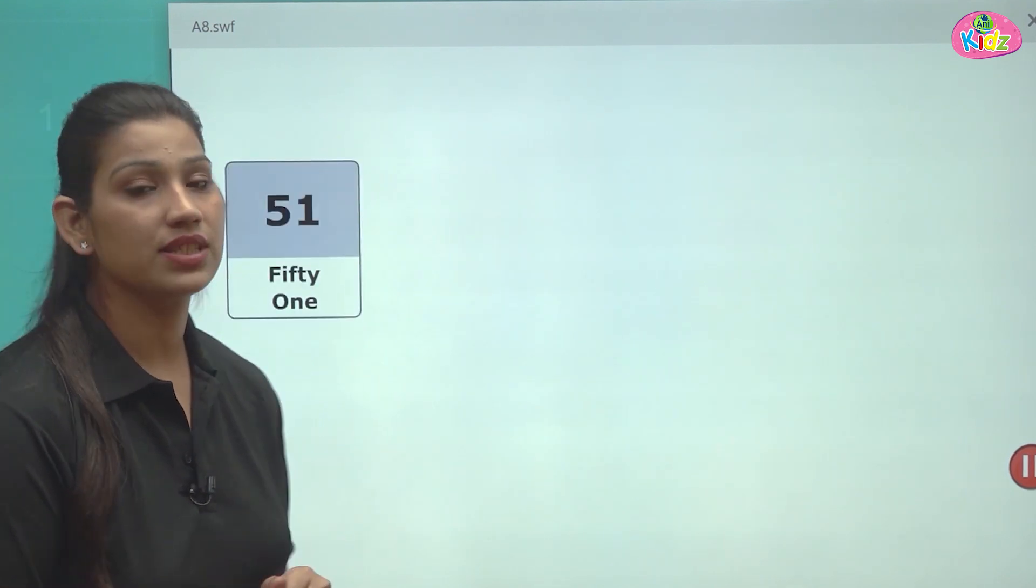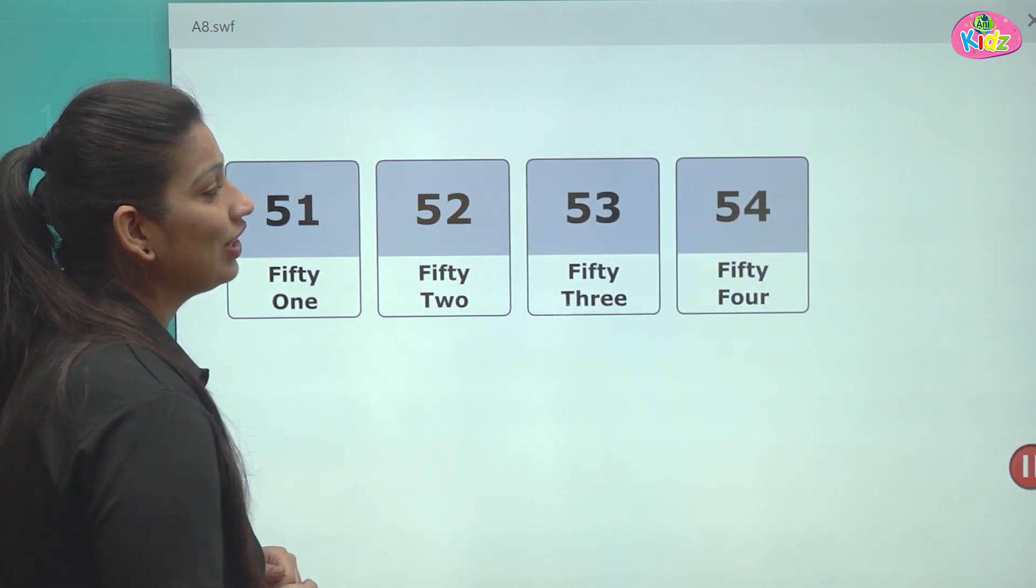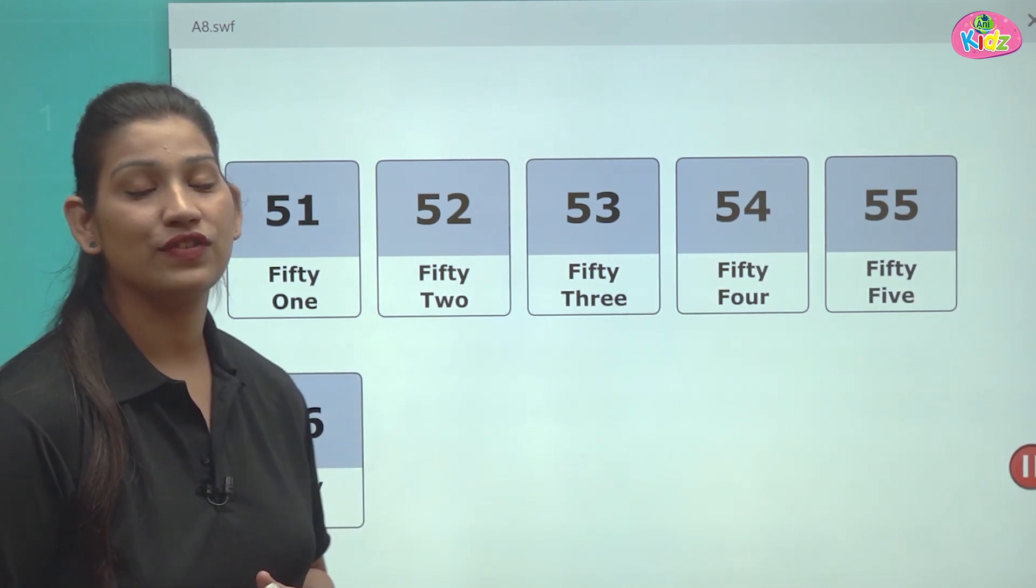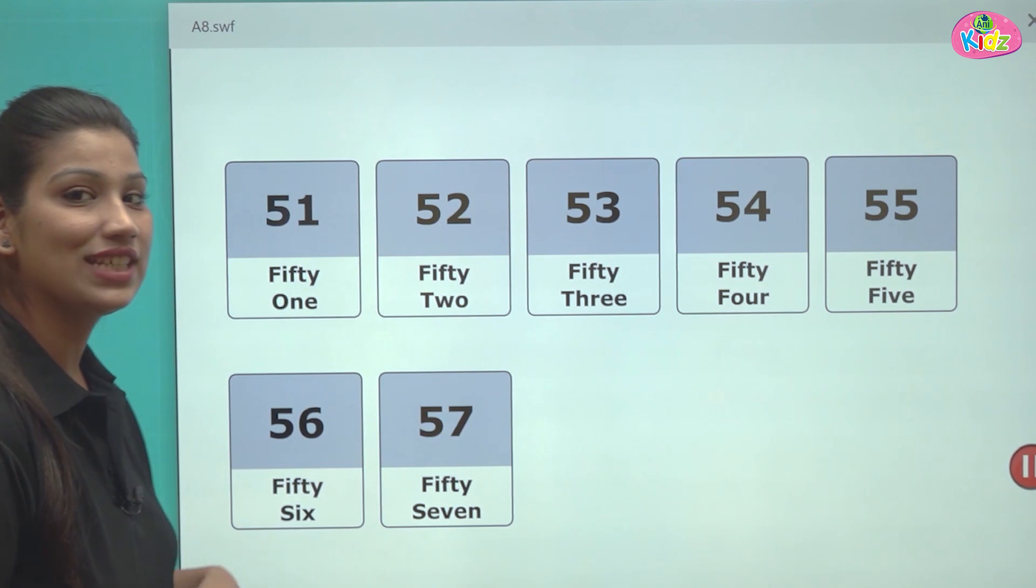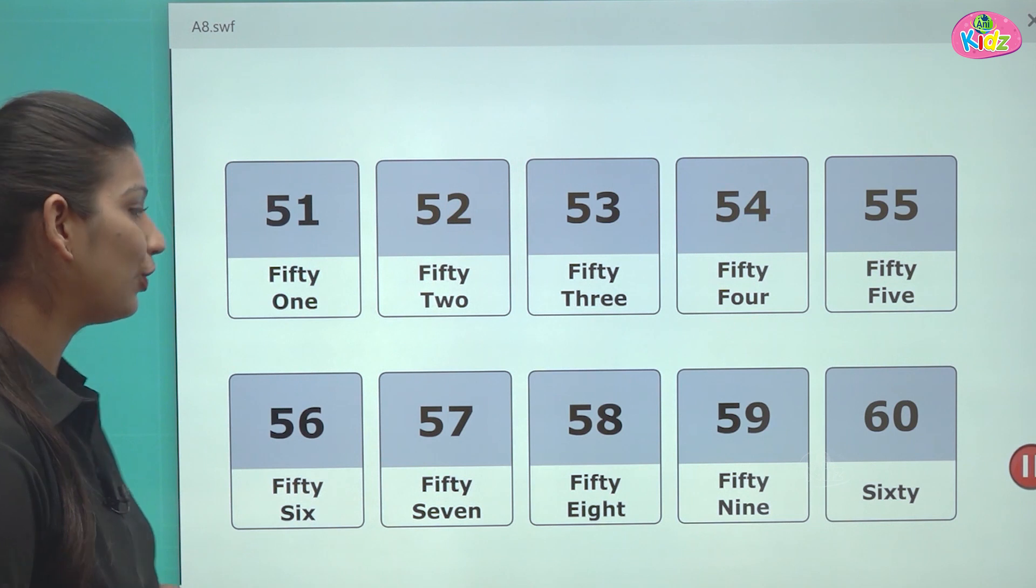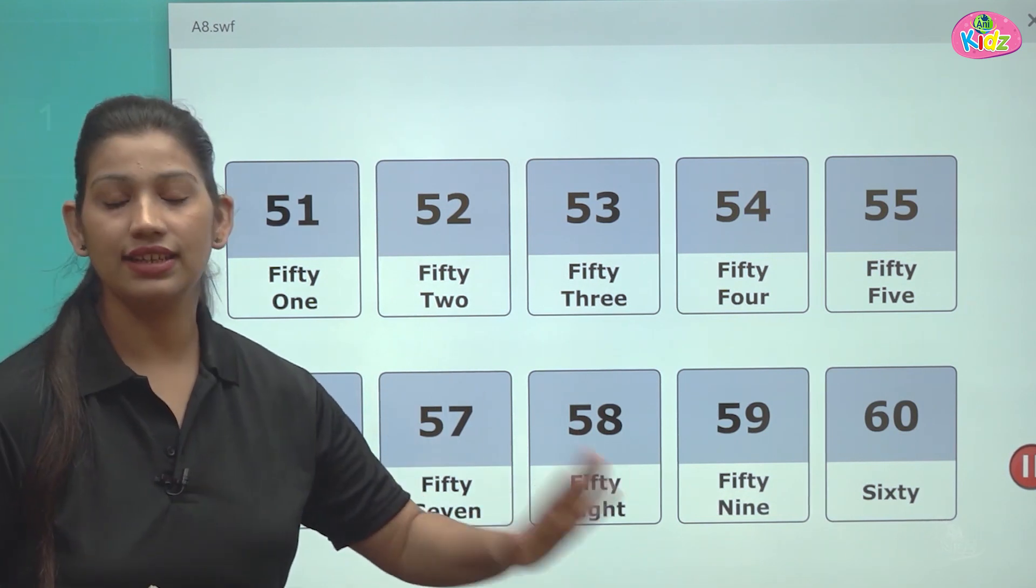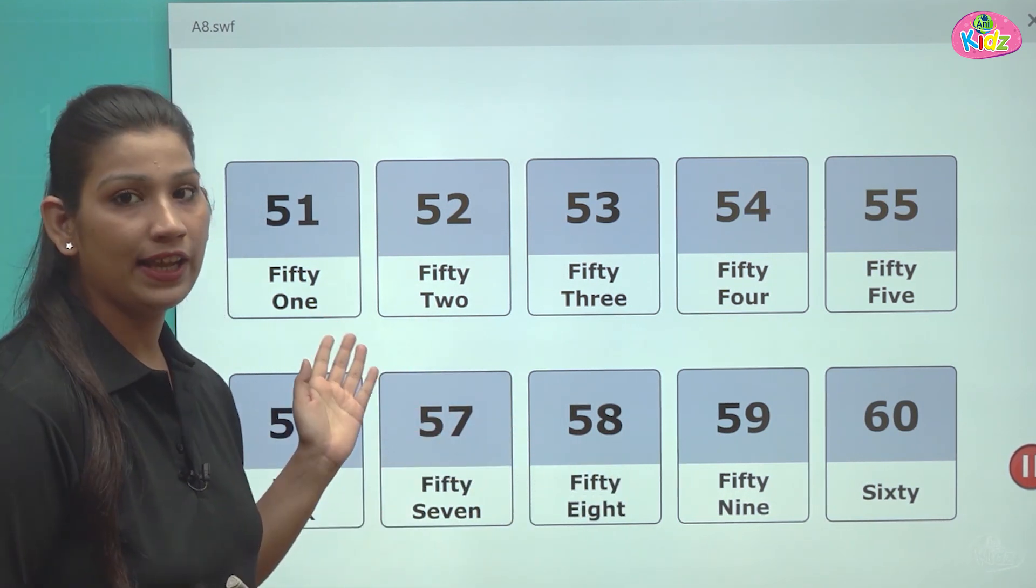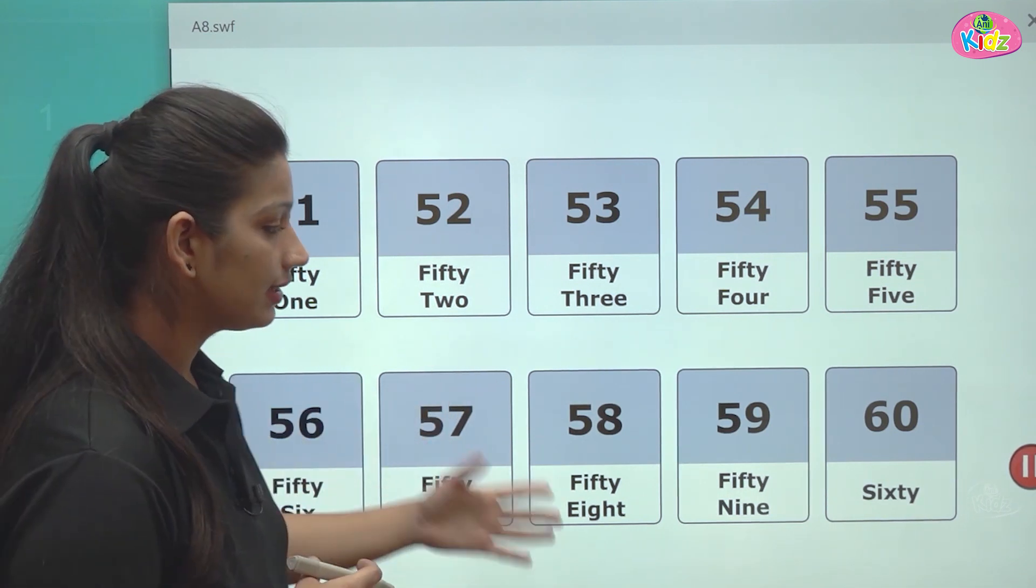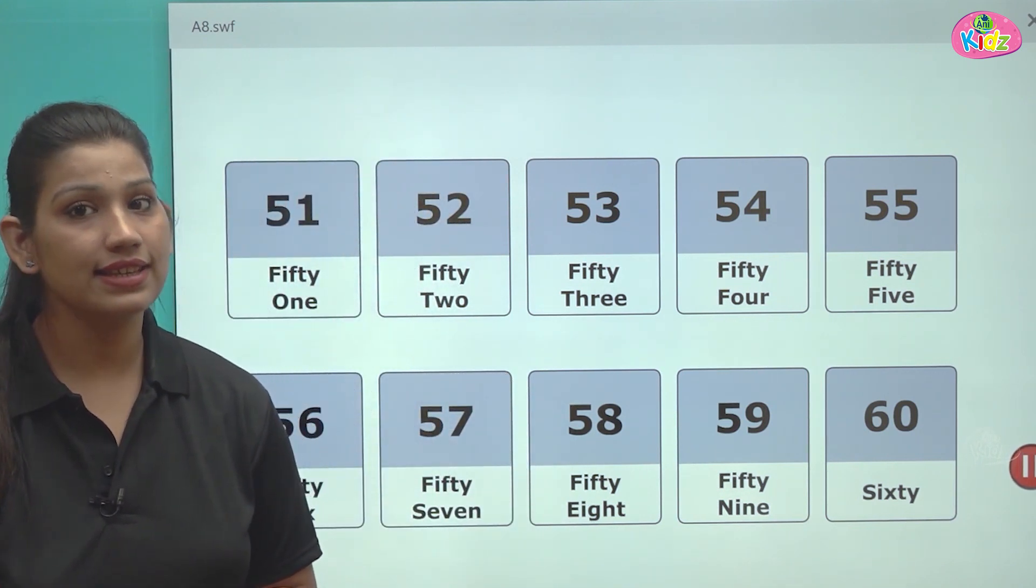After 50, there comes number 51, 52, 53, 54, 55, 56, 57, 58, 59 and number 60. 51 se leke 59 tak, wahi similar pattern, pehle aap 50 ki spelling likhenge, phir 1, 2, 3, 4, whatever you have to write, until 59. Then comes up 60.